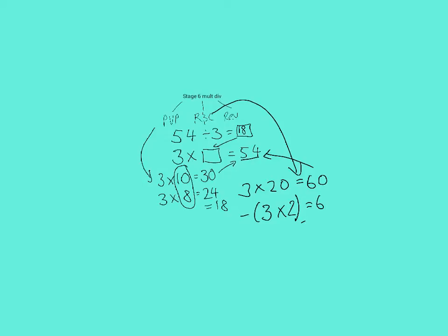Which is equal to 6. 60 minus 6 is equal to 54. I had 20 groups. I subtract 2 groups. So 20 minus 2 is equal to 18. Once again, that takes us back to the same answer that we had before, of 54 divided by 3 is equal to 18.